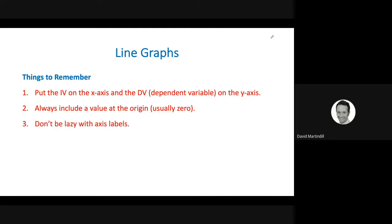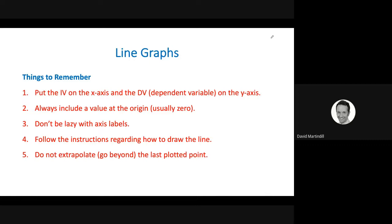Don't be lazy with your axis labels. Write out the full name of the variable. So if it's length, don't abbreviate to L. Write length. Follow the instructions regarding how to draw the line. Do not extrapolate or go beyond the last plotted point. And if there are two lines, ensure that you use a different point to plot. So it could be crosses for one of your lines and encircled dots for the other. Let's have a look at some examples of poor and good work with these things in mind.